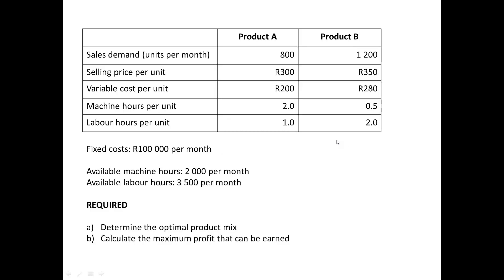This question will typically appear in MAC 2601 or MAC 3701, or even in CTA. I want to mention that the basics — what we're going to do now — are the most important thing even at CTA level. It's the basics that lose marks for students, not the tricky stuff. The tricky stuff is generally 20 to 30 percent of the marks or less, while the basics are 50 or 60 percent — and that is why students fail.